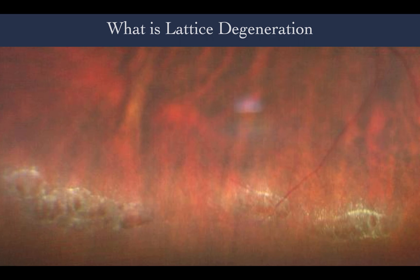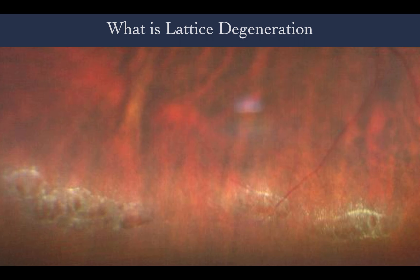Some of the common findings and presentation of lattice degeneration are round-shaped retinal thinning, pigmentation in the periphery, flags, white or red patches or craters, and sometimes lines or holes. The prevalence of lattice degeneration among various populations is about 10%.